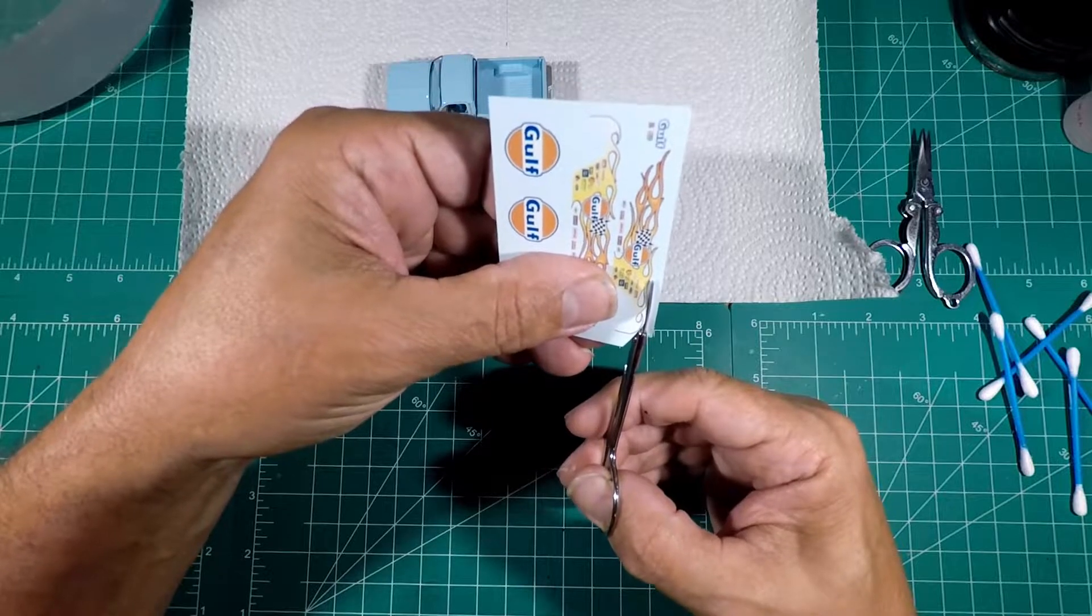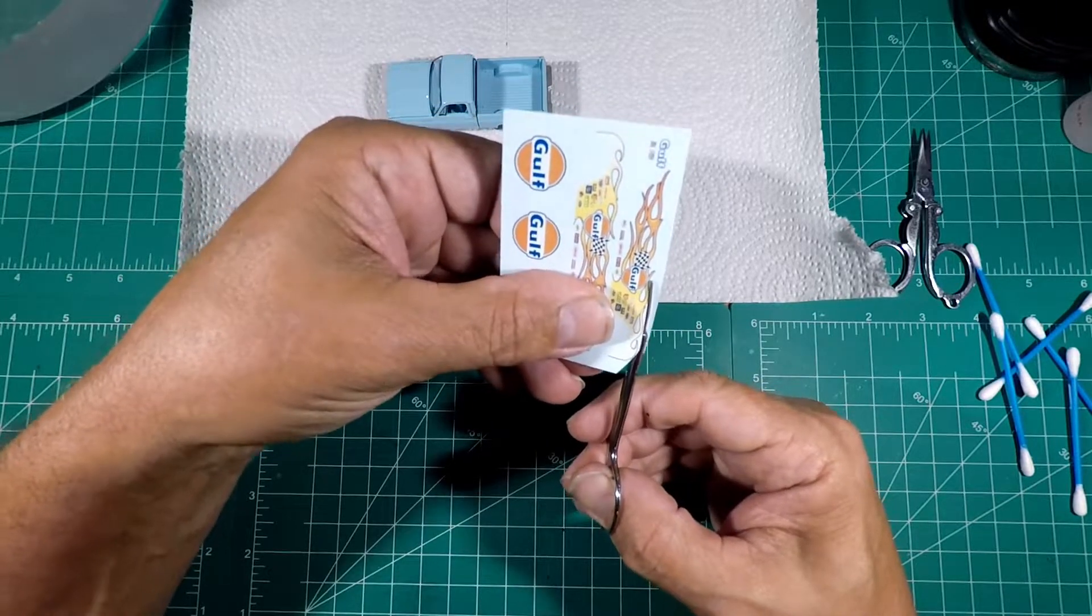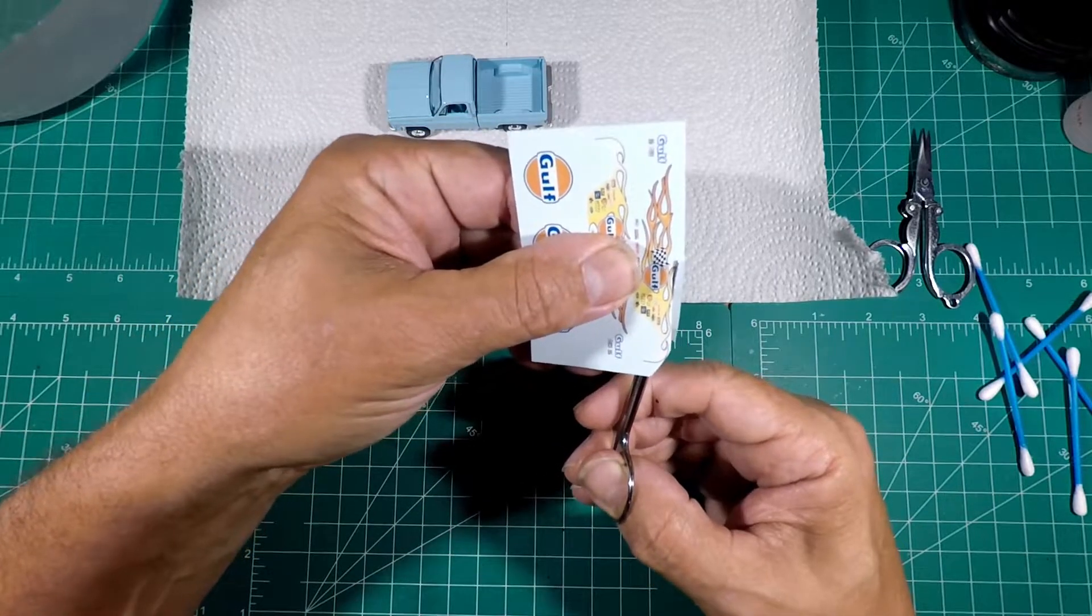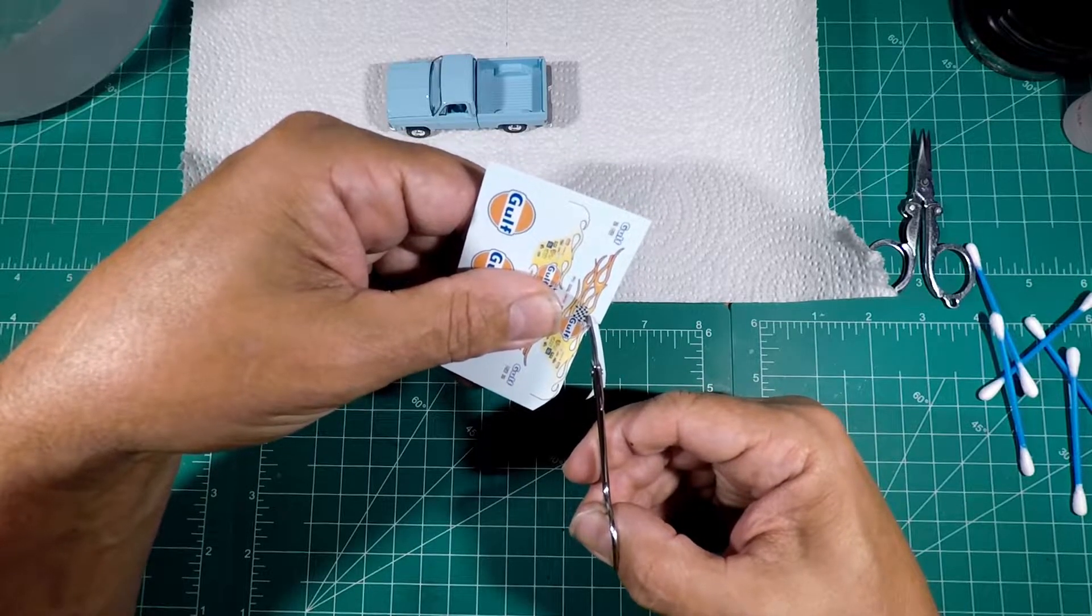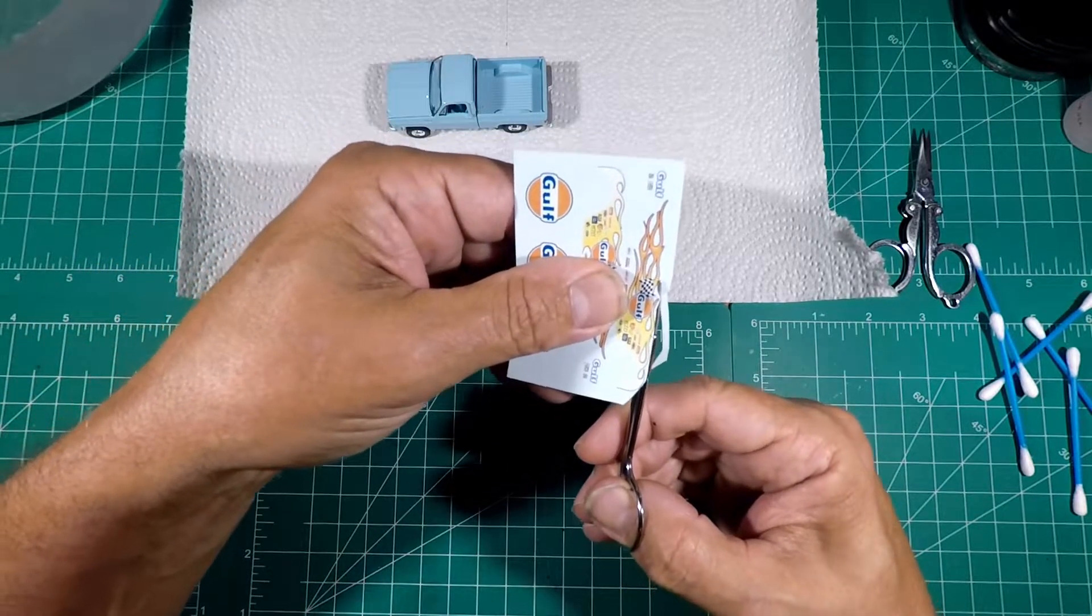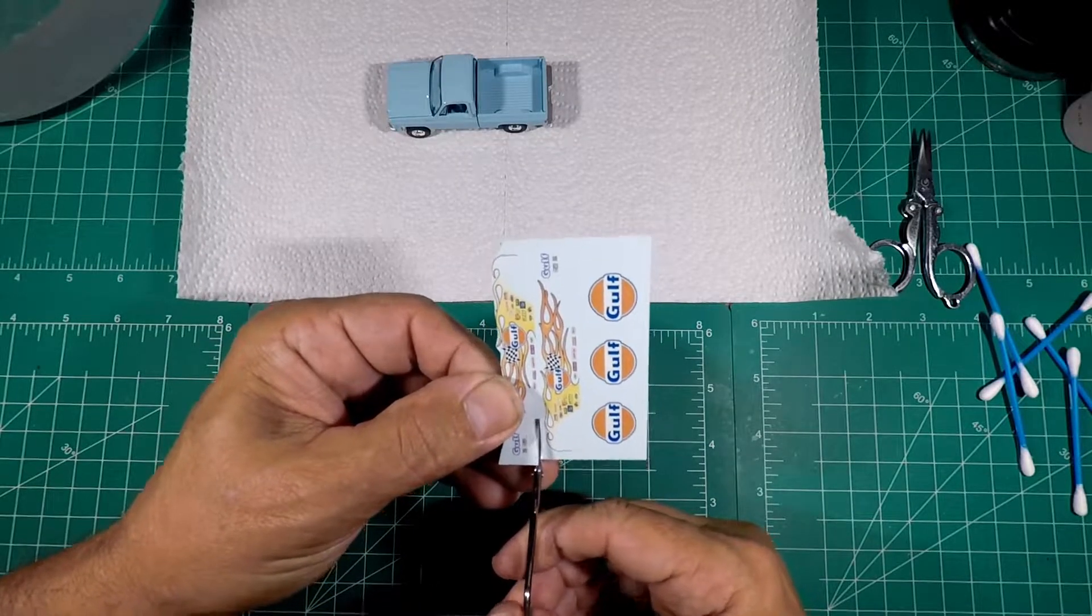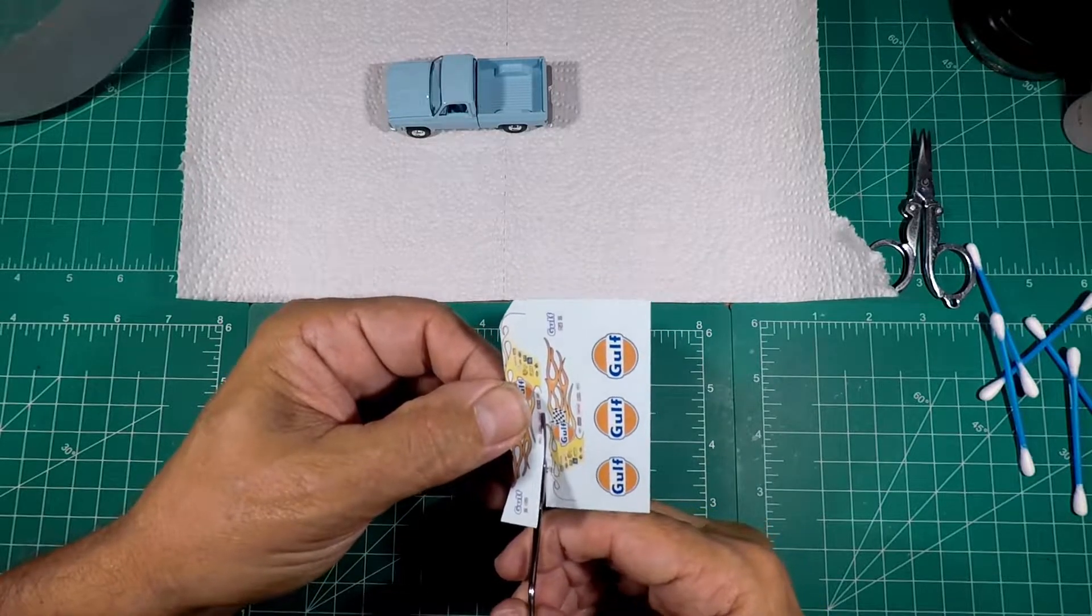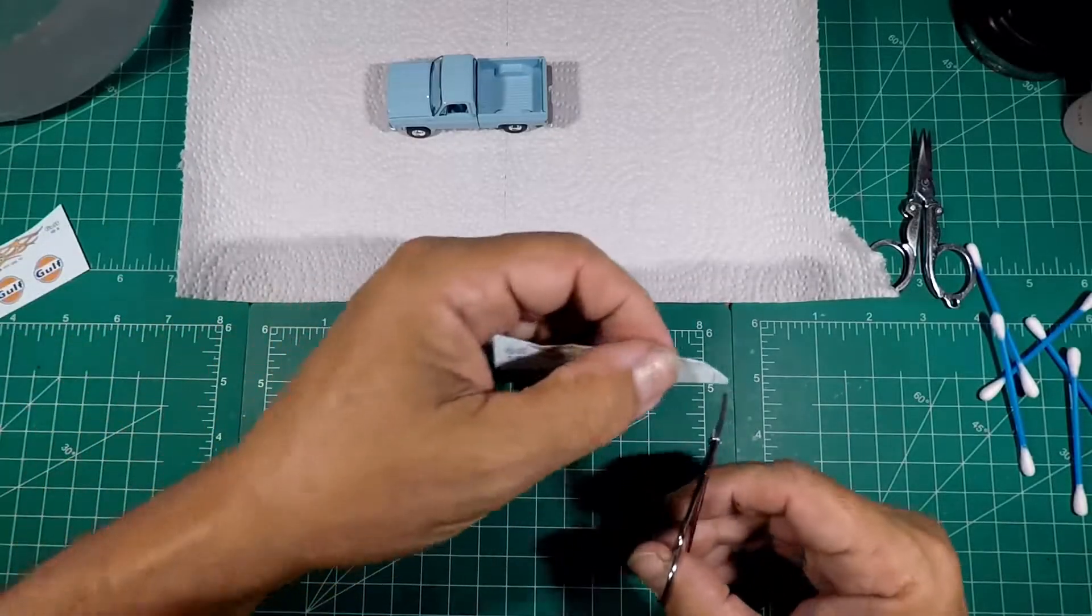As always, we want to just cut close to the lines to start with. We don't want to try to be exact or cut anything out or anything like that. We just want to kind of keep everything close. Now I'm just going to quickly run up between them, that way we don't have so much we're trying to work with.